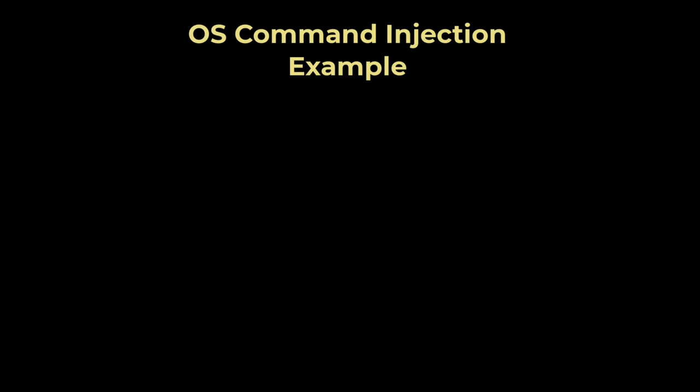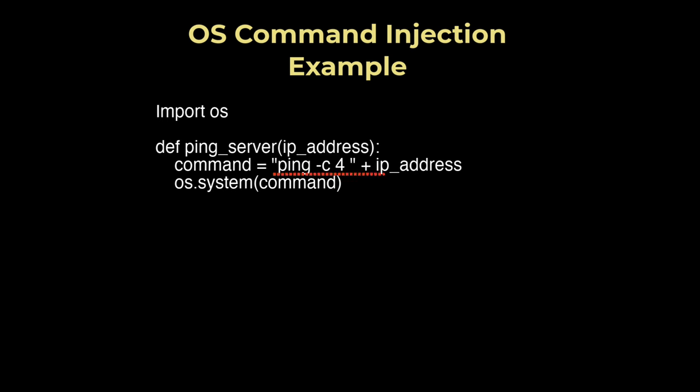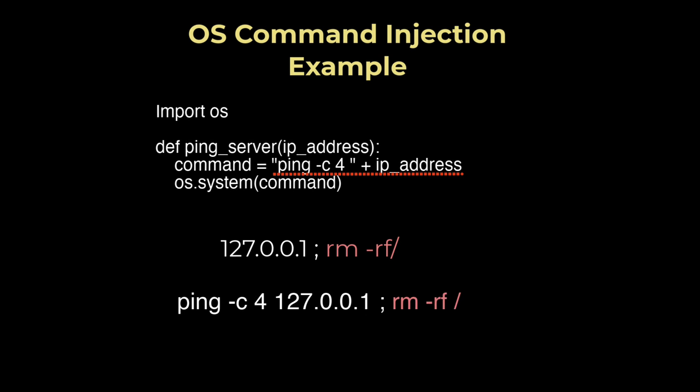In the OS command example, consider a web application that allows users to check the status of a Linux-based web server by entering an IP address. The application constructs a command to ping the provided IP address and returns the result. The vulnerable ping server function constructs a command string using the user-provided IP address and executes it with os.system. An attacker can inject additional commands by entering a malicious IP address — using a semicolon to append a second command such as rm -rf /, which deletes the entire web server drive.